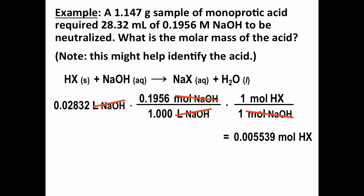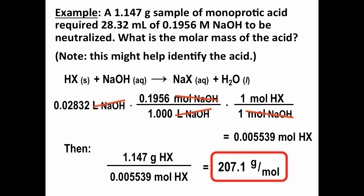Now, remember, we're not trying to find moles of HX, we're trying to find molar mass. But if you remember what molar mass is, it's how many grams there are per mole of that substance, and we now know both the grams of our sample and the moles of our sample, and grams to moles is what gives us molar mass, providing both numbers refer to the same amount of substance, which they do in this case. So 1.147 grams of HX divided by 0.005539 moles of HX gives us 207.1 grams per mole for the molar mass of our unknown acid.